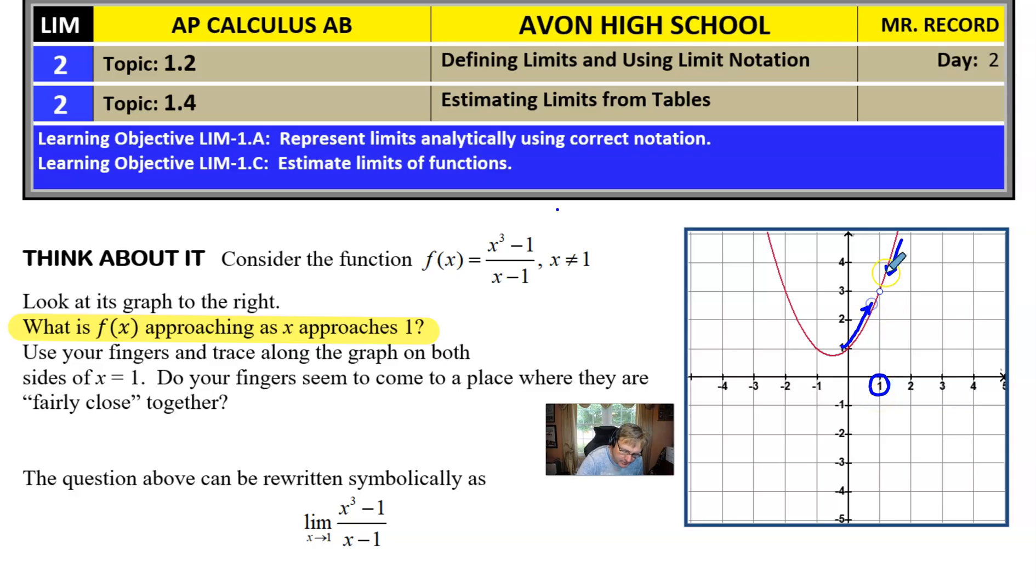And I hope that you guys will see that the answer is this value here, 3. That's because our fingers get so close together at that y value. They don't touch. This is not a roundabout that you can just go around, but they come very close to meeting. And that's good enough to say that the y value is 3.